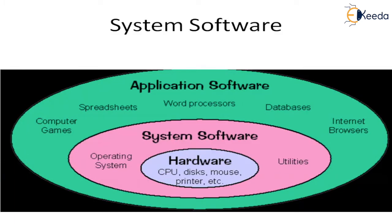The system software concept works as an interface between the hardware and application software. Hardware contains components like the CPU, BIOS, mouse, printer, etc. System software is nothing but the operating system and utilities. On the outer layer, application software can work — that includes computer games, spreadsheets, word processors, databases, internet browsers, and more. Please refer to this diagram for the system software architecture.